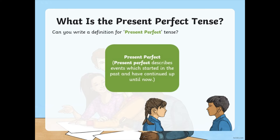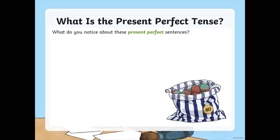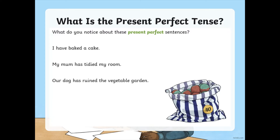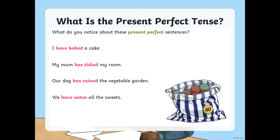Now, present perfect. We've looked at present simple and past simple, so what about present perfect? This describes events which started in the past and have continued up to now. Look at these present perfect sentences: 'I have baked a cake. My mum has tidied my room. Our dog has ruined the vegetable garden. We have eaten all the sweets.' Notice what comes before the verb — have baked, has tidied, has ruined, have eaten. To make present perfect sentences, we use have or has, and then the past tense of the verb.